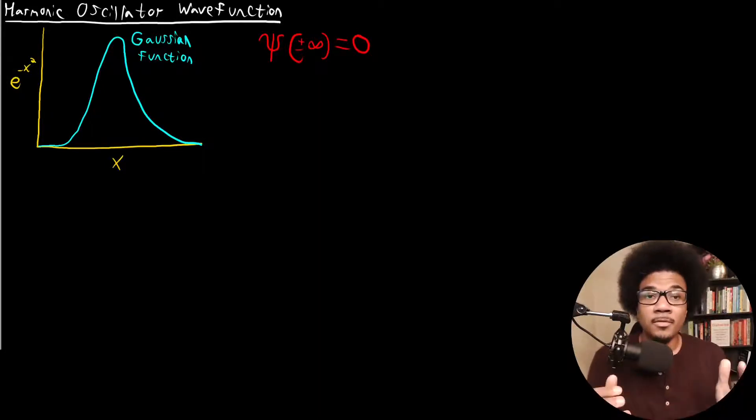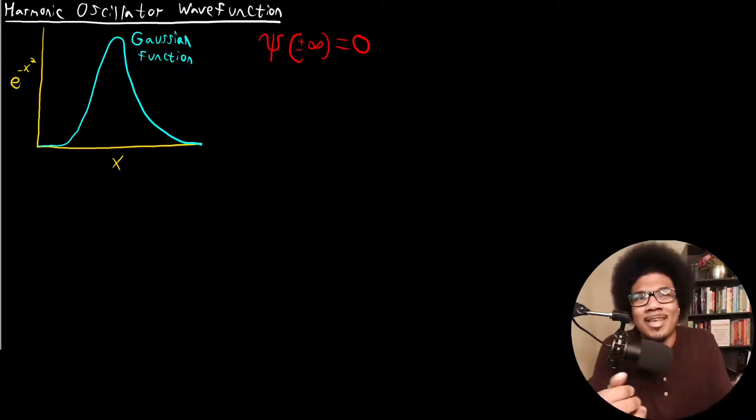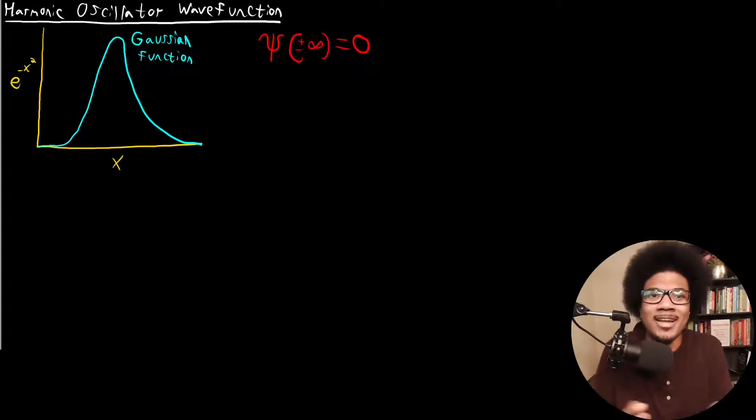What does this mean for us physically? Physically, this means we can't infinitely stretch the oscillator. It just means that this has got to be zero at some point. Sticking with the chemical bond analogy that we've been using, this means that the bond's got to break at some point. So this is what this boundary condition means physically. This is the only boundary condition that we really have to consider.